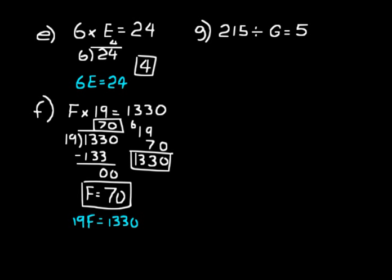Let's do a missing number division problem now. Practice problem G. We have 215 divided by G equals 5. Now, multiplication problems, you can always use division to find your missing number. In a division problem, sometimes you have to use division, sometimes you have to use multiplication to find your missing value. It's kind of like subtraction: sometimes you have to do addition, sometimes you have to do subtraction. Depends on if you have a missing minuend or subtrahend. In division, it depends if you have a missing dividend or a divisor. Here we have a missing divisor. So what we need to do to figure out what that missing divisor is, is do division.